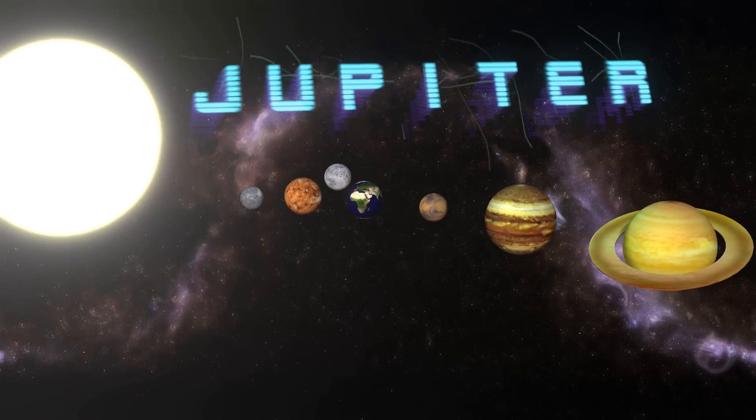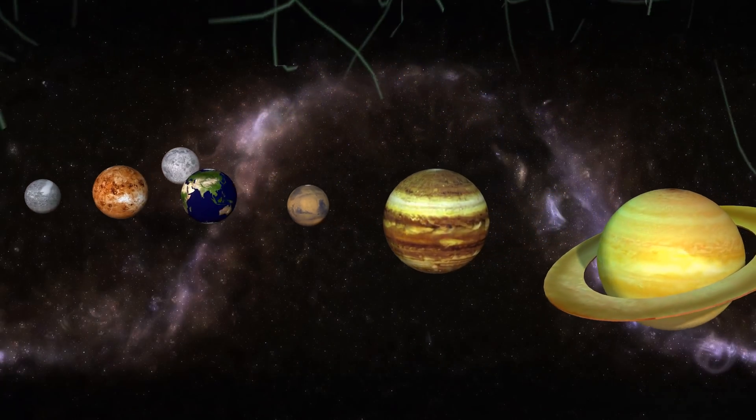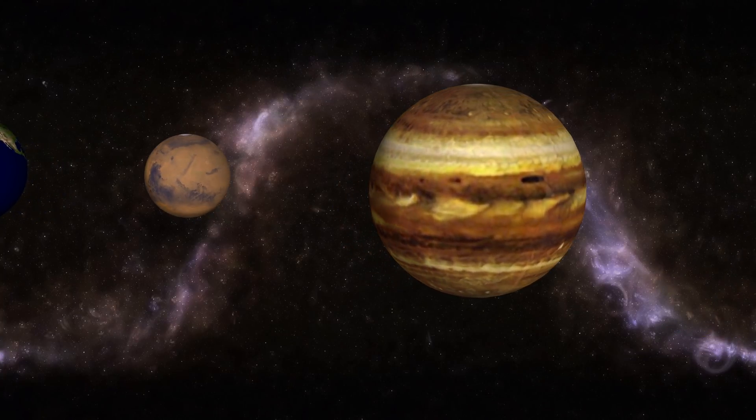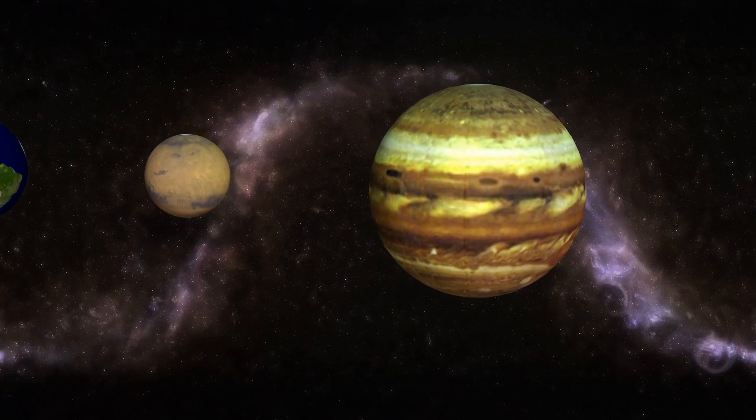Jupiter is the largest planet in our solar system and is known for its many moons, its dangerous radiation belt, and its iconic great red spot.